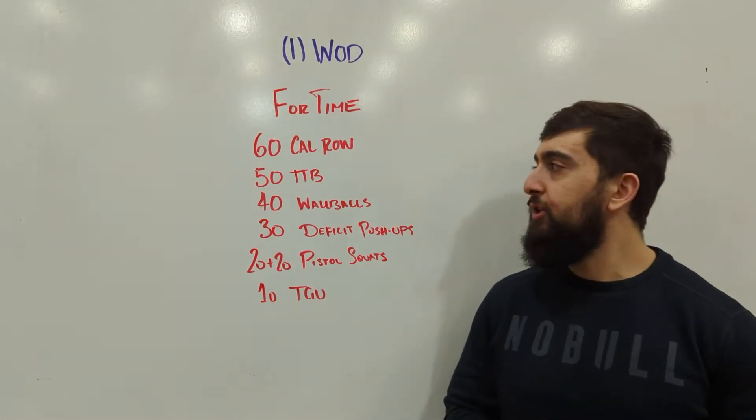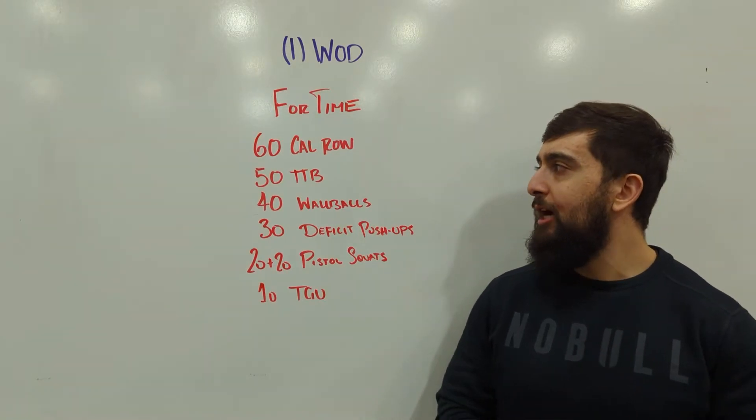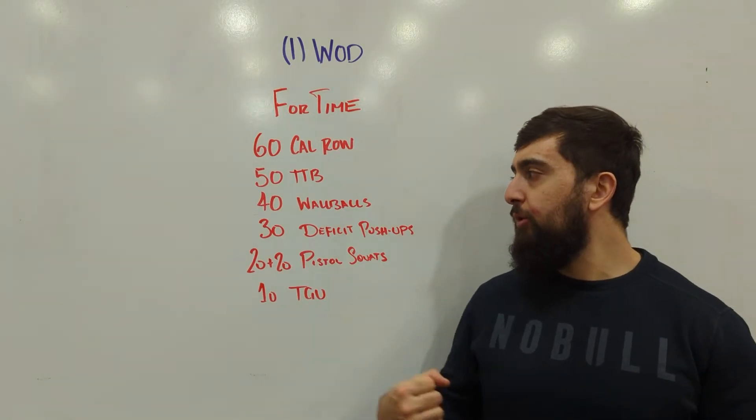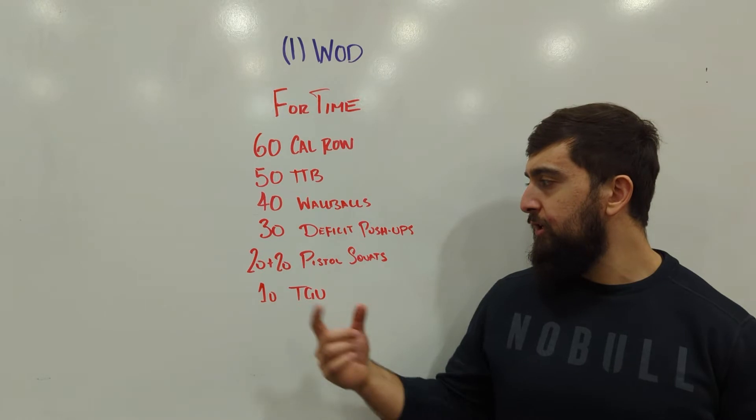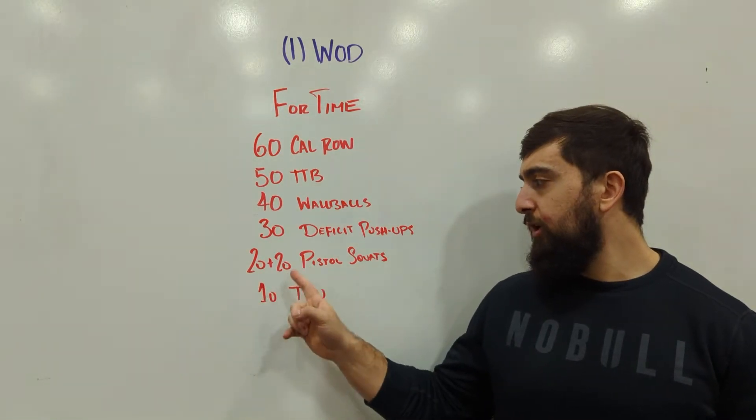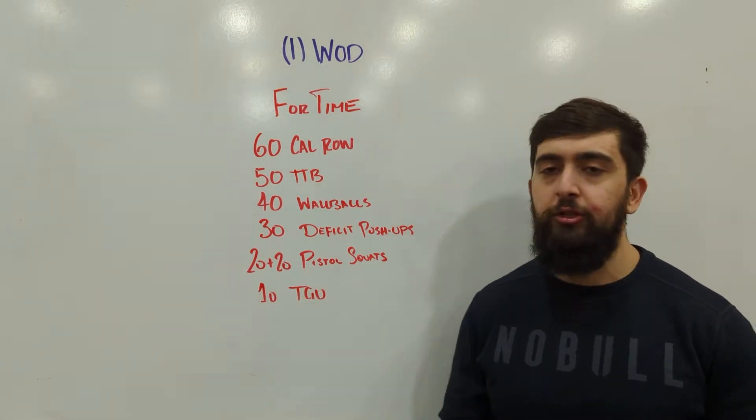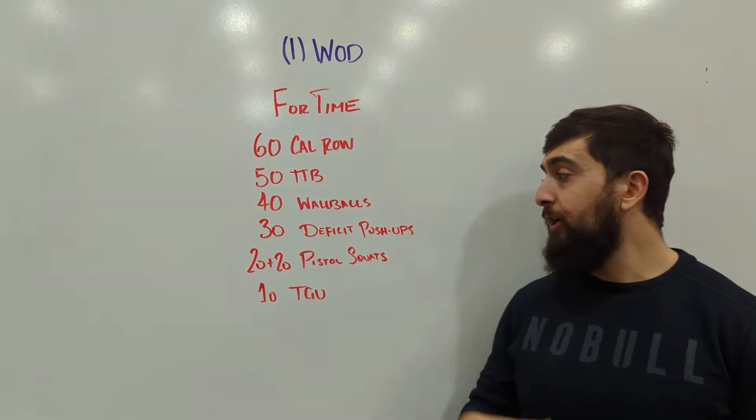The workout is a 60 cal row, then 50 toes to bar, 40 wall balls, 30 deficit push-ups, 20 and 20 pistol squats per side, then 10 turkish get-ups. The goal of this workout is again just getting the overall body moving here.